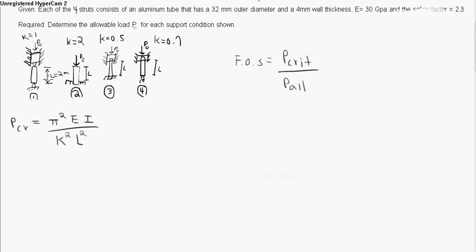As you can see right here, I have four pictures. Each one of these consists of a strut, which is an aluminum tube that has a 32mm outer diameter and a 4mm wall thickness. Each one has the same modulus of elasticity of 30 gigapascals, and each one has a safety factor of 2.3.